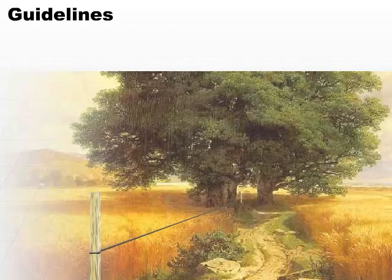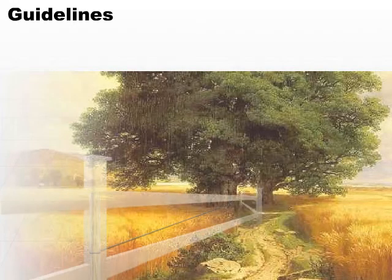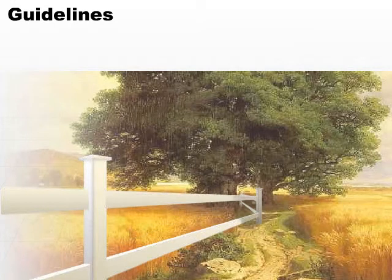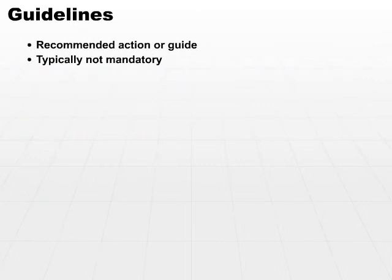Now, the guideline shows you basically where the fence is going to go. If there's a big tree in the way, then you kind of move the line a little bit to go around the tree, or you might want to cut the tree down. You can see that the guideline shows general direction, but is flexible enough to make a few modifications if necessary.